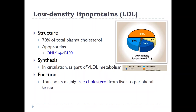Low-density lipoproteins carry about 70% of the total plasmatic cholesterol. They are smaller in size and have only one apoprotein, ApoB100. Their synthesis occurs in the circulation through the metabolism of VLDL, as we have seen. They transport free cholesterol from the liver to the peripheral tissues — for cells to regenerate their membranes, for endocrine tissues to form steroid hormones, or for the kidney to form vitamin D.